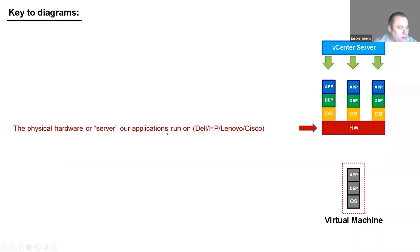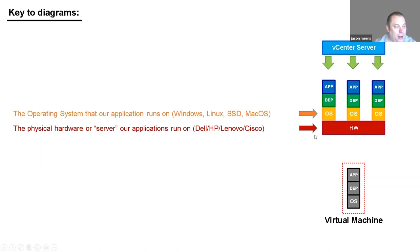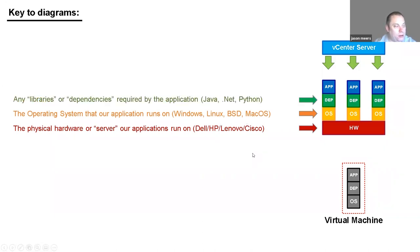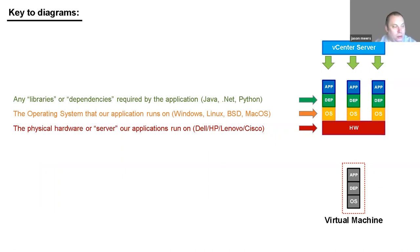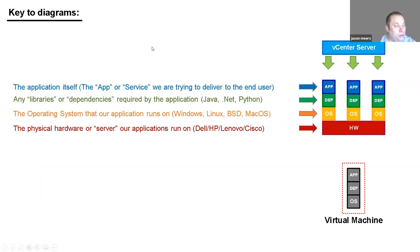On the diagrams, the hardware is shown as a red block — each block represents one server, something from Dell, HP, Lenovo, or Cisco. The next block is the operating system, typically Windows, Linux, BSD, or macOS. Then we have libraries or dependencies — these are not part of the application itself but things the application requires to run, like Java, .NET, or Python.